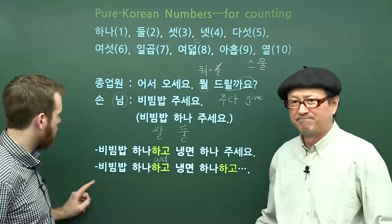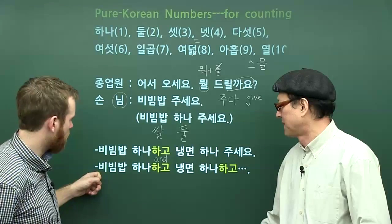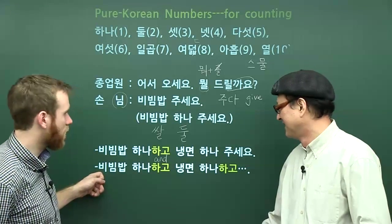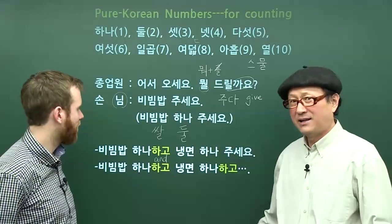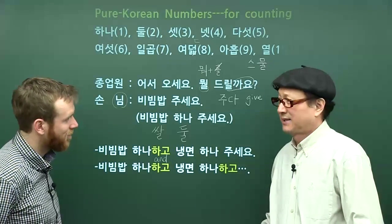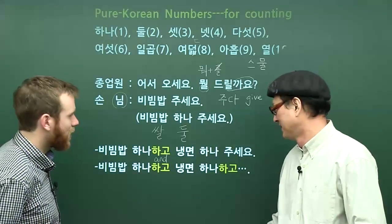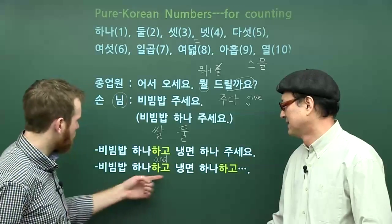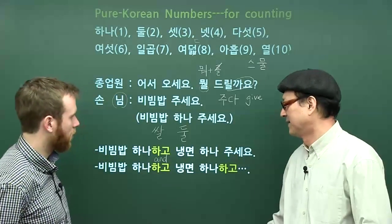We can keep going with this. It looks like we're going to have a very big meal. The customer says: 비빔밥 하나 하고 냉면 하나 하고 돈까스 하나 하고... Ordering maybe for a whole table full of people, just keep adding 하고, 하고, keep going.